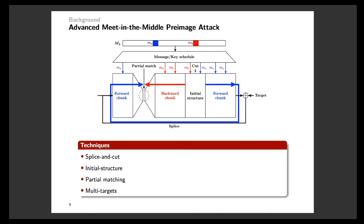In addition to the basic concept, several techniques have been proposed to extend the attack framework. The splice-and-cut technique regards that the first and last steps can be spliced to be consecutive steps by the feed-forward mechanism, so any step can be the start point or the matching point of the meet-in-the-middle attack. The initial structure is a few consecutive steps including at least two neutral words, where steps after the initial structure can be computed independently of one neutral word, and steps before can be computed independently of the other neutral word. This technique enables one to skip several steps at the beginning of chunks.